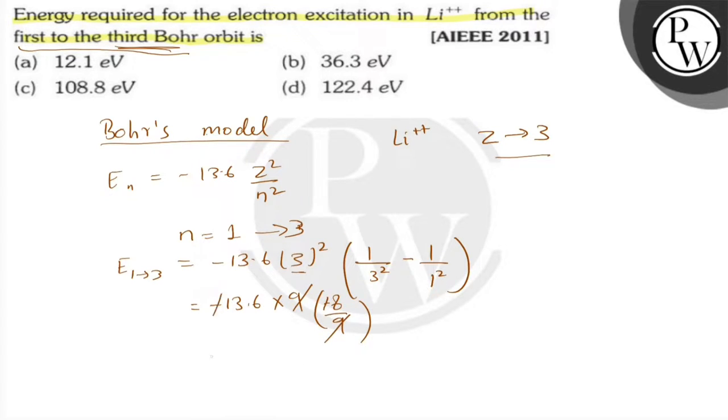The 9s cancel, the negatives cancel, and this equals 108.8 electron volts.